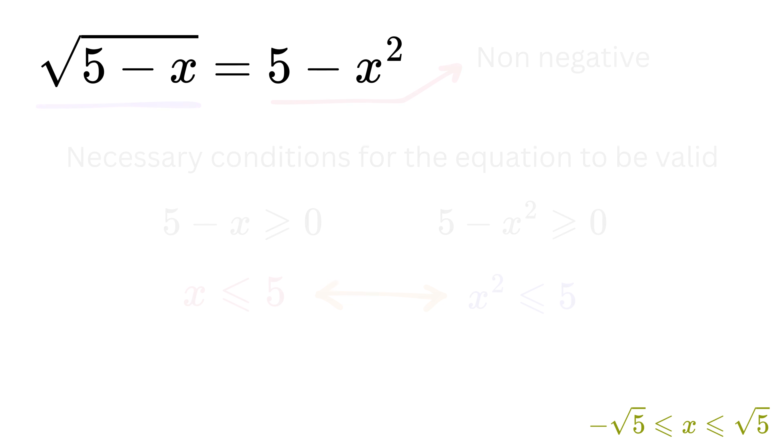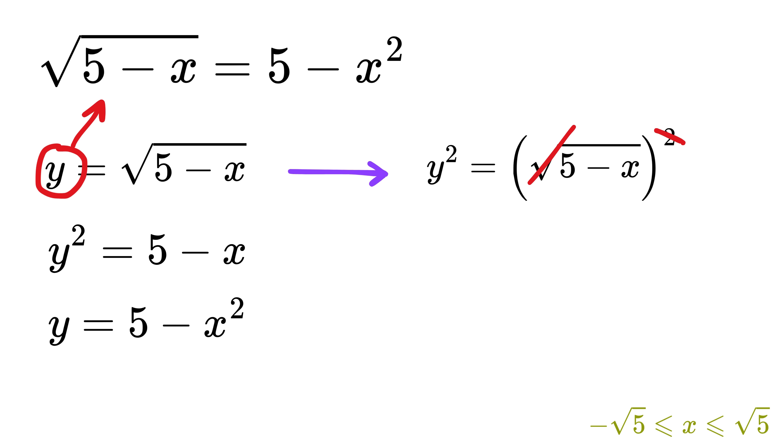Great. Now let us assume a variable y equals square root of 5 minus x. From this definition, we can square both sides to get y squared equals 5 minus x. Now, substitute y back into the original equation to get y equals 5 minus x squared. This way, we have a system of two equations.